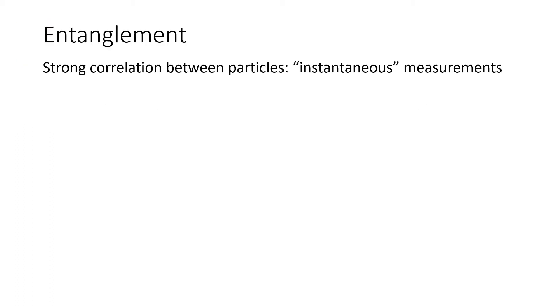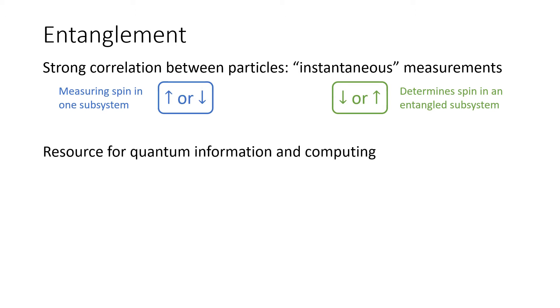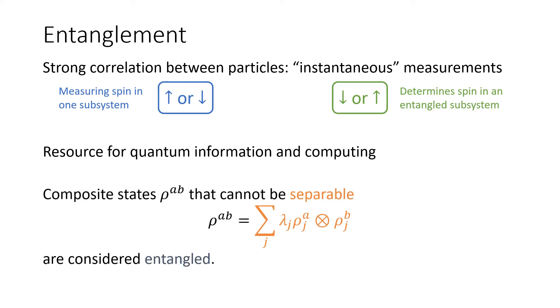Entanglement is a phenomenon where the state of a single particle cannot be independently described from the state of the other particle. Entanglement is used as a resource for quantum information in computing, and a common way to detect whether pairs of particles are entangled is to see if their composite states are not separable.